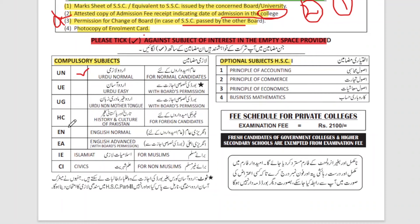Then click on English. For English, just like Urdu Normal, you will select English Normal for a normal candidate. If you have special permission, then go with English Advanced. Otherwise, click on English Normal. Then select Muslim or, if not Muslim, select Civics.